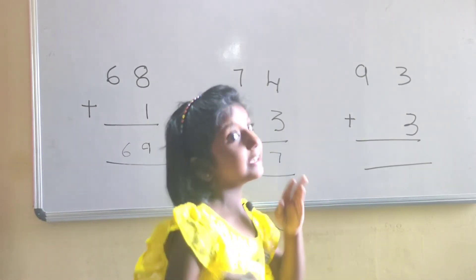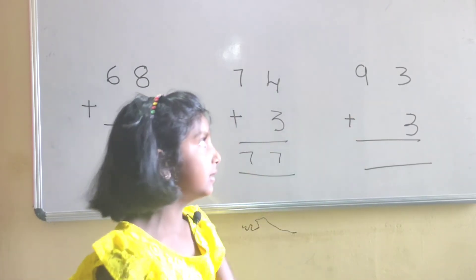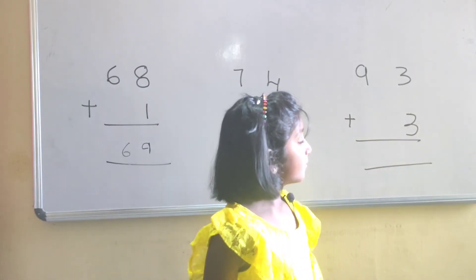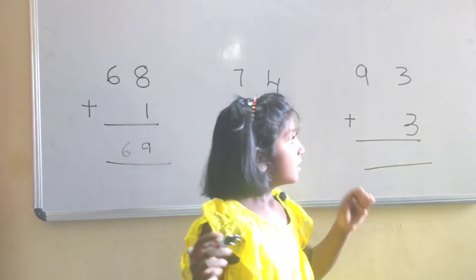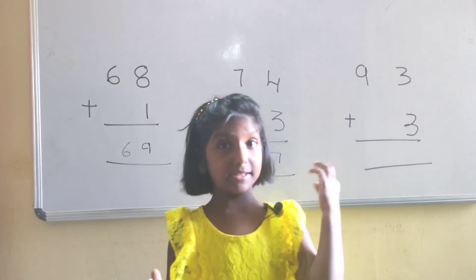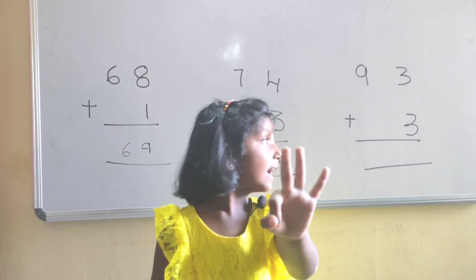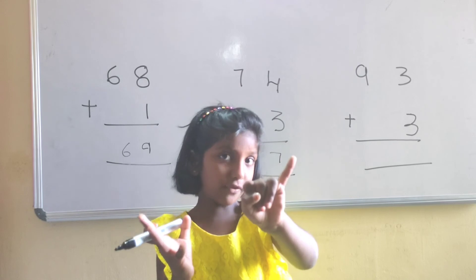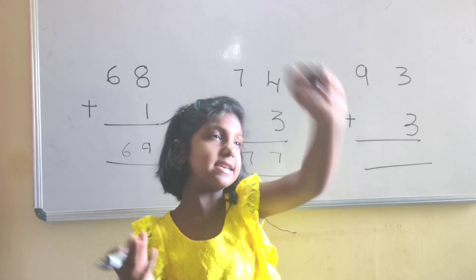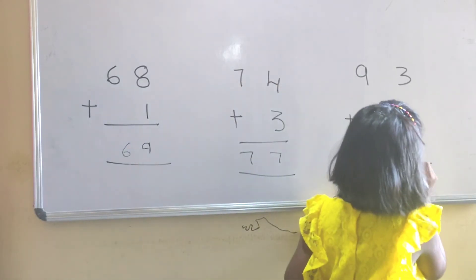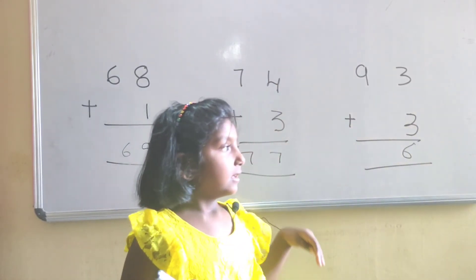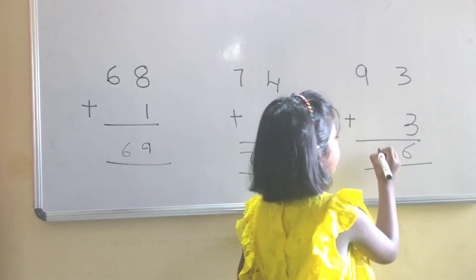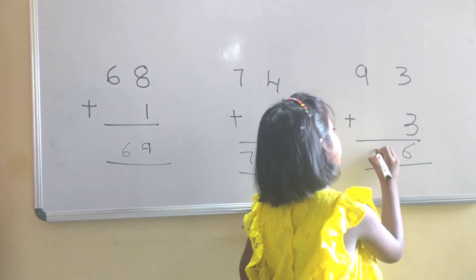Let us see the next problem. That is 9, 3, 3. 3 in mind, 3 in hand. 3, after 4, 5, 6. The answer is 6. Here there is no number to add, that's why 9.